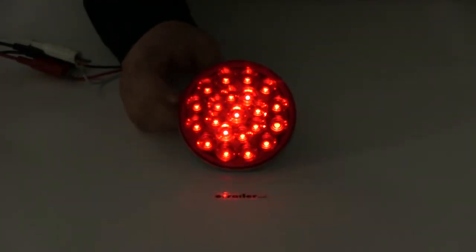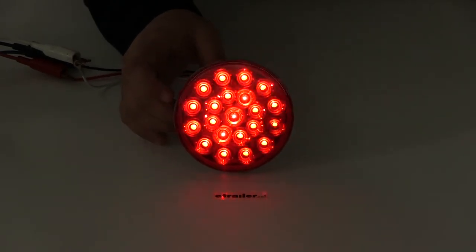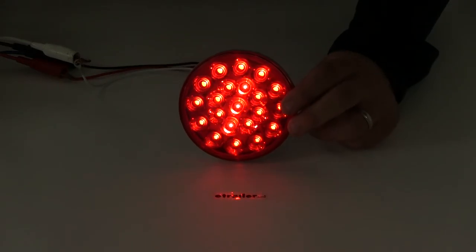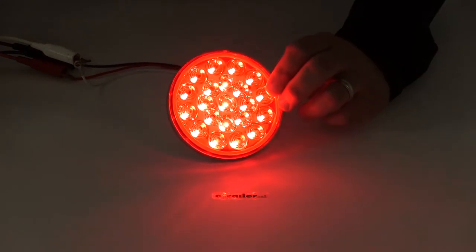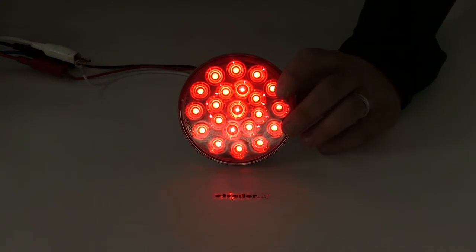You can see here that it sends out a nice consistent LED signal. This is the tail light function, and it illuminates whenever we hit the brakes. It brightens up quite a bit. It's the same function when we apply the turn signal as well.